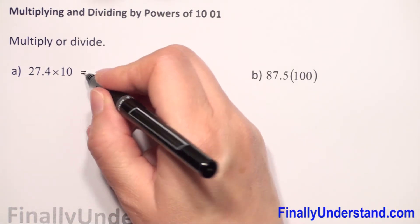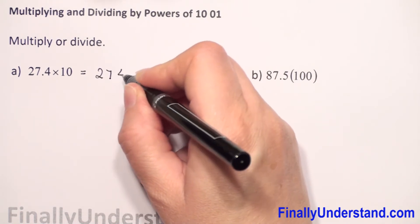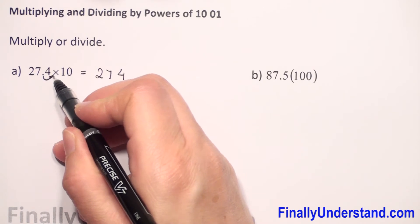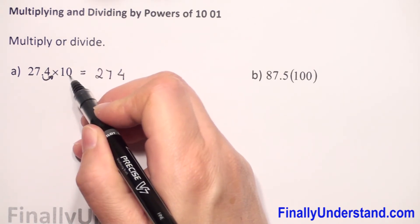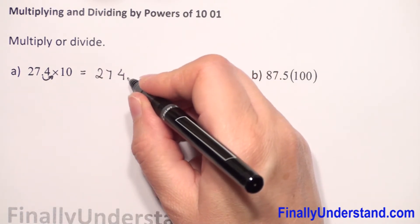So this is equal to—first we will copy 27.4, and next, this decimal point we have to move to the right side because 10 has one zero. So we move one digit to the right, so the decimal point will be after 4.